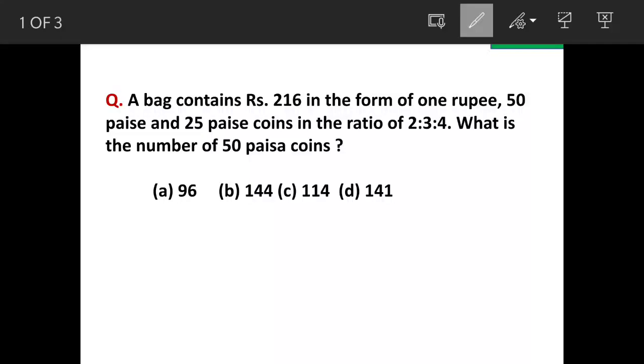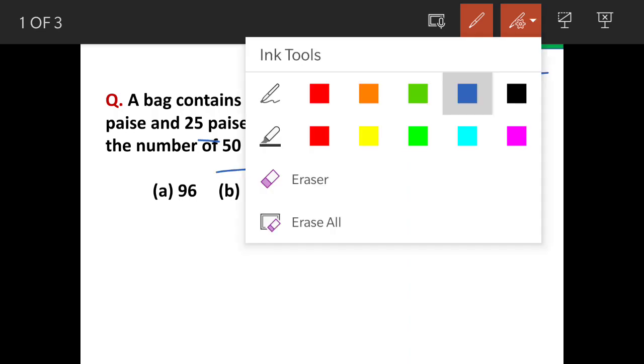A bag contains 216 rupees in the form of 1 rupee, 50 paisa, and 25 paisa denomination, and the ratio is 2 is to 3 is to 4. What are the number of 50 paisa coins? We have got answer options given. This is the question.